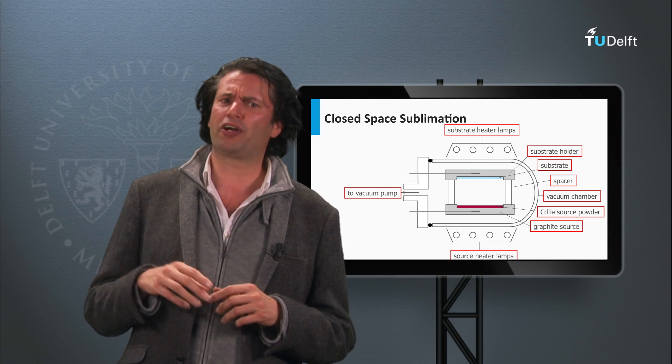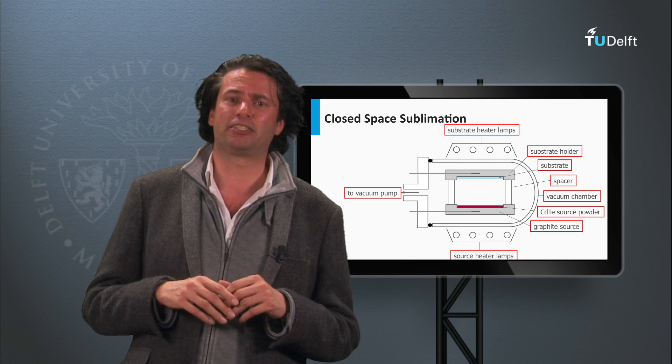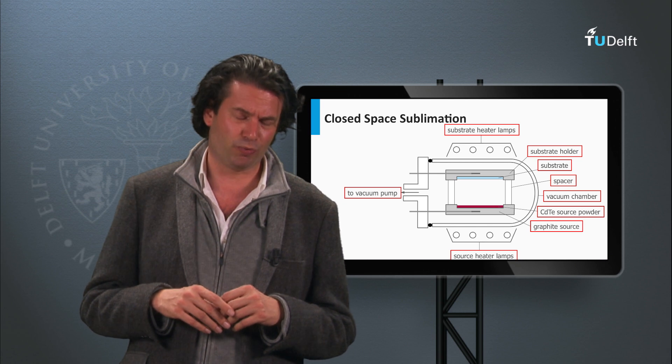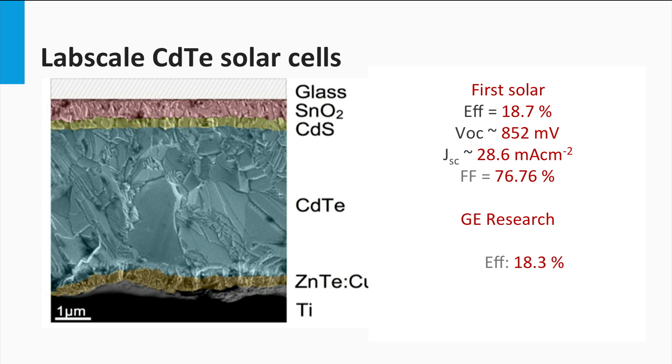However, First Solar is by far the largest cadmium telluride manufacturer in the world nowadays. From 2008 First Solar has an annual production rate of 500 MW and more, and was in 2006 and 2007 one of the biggest solar module manufacturers in the world.